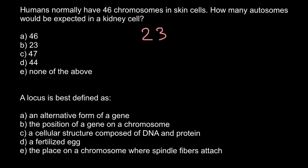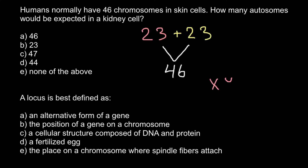Normally we have 23 pairs of chromosomes — 23 from the father's side and 23 from the mother's side — so the total number would be 46 chromosomes. Autosomes are all the chromosomes except the sex chromosomes. We have two sex chromosomes: X and Y define male, and X and X define female. So the total number of autosomes would be 44, and this is answer D.